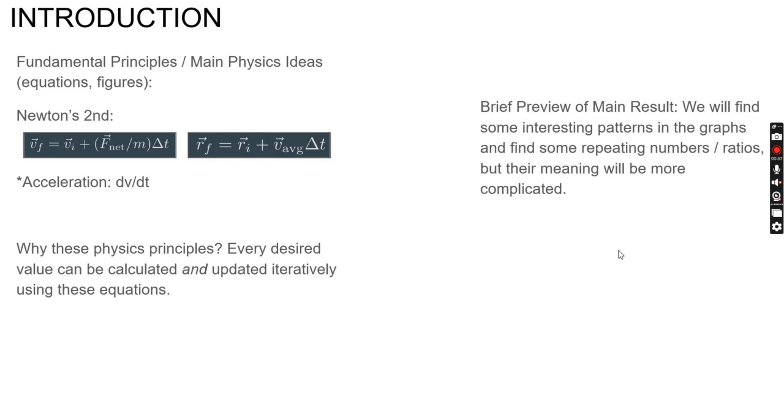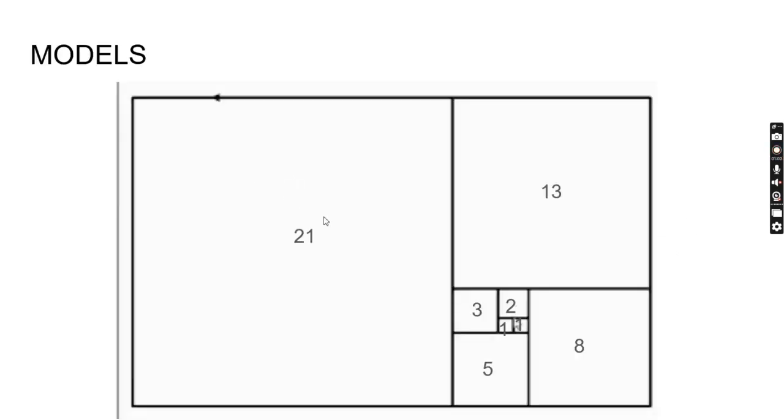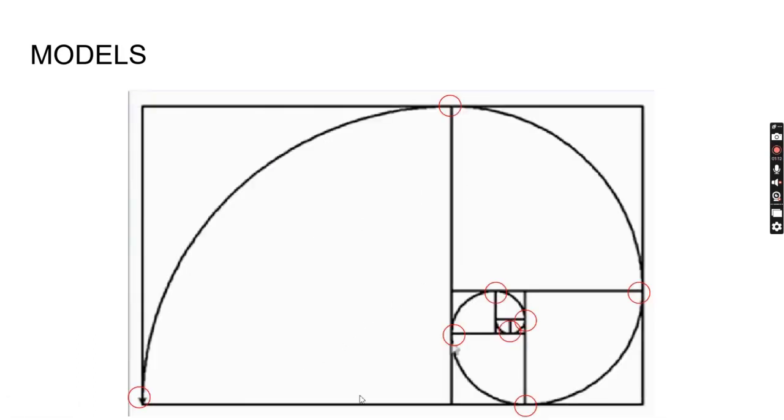Preview: We'll find some cool patterns in the graphs and repeating numbers and ratios, but their meaning is more complicated. The Fibonacci spiral starts here, circles around adding the two previous numbers every time. This is a visual representation hitting these corners in this pattern.